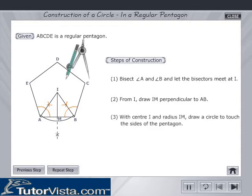With centre I and radius IM, draw a circle to touch the sides of the pentagon. This is the required circle in the pentagon ABCDE.